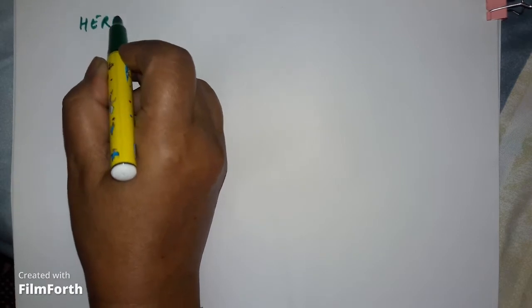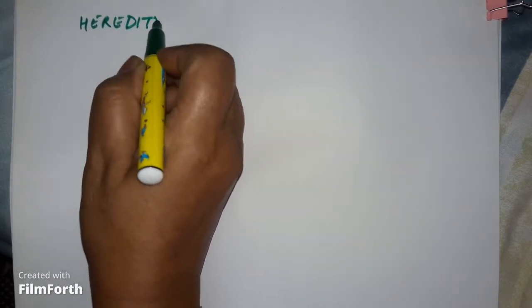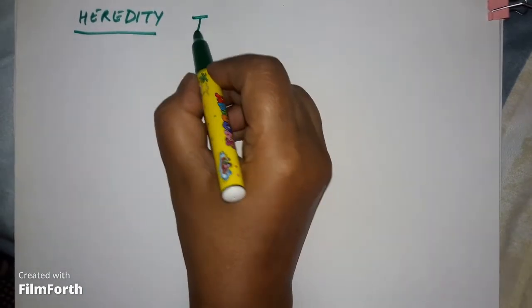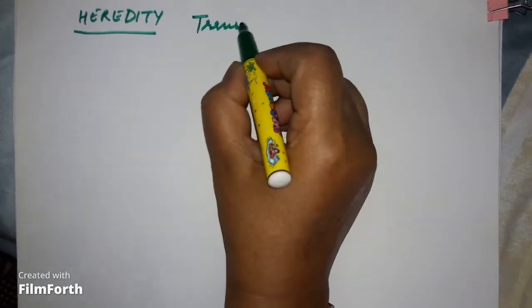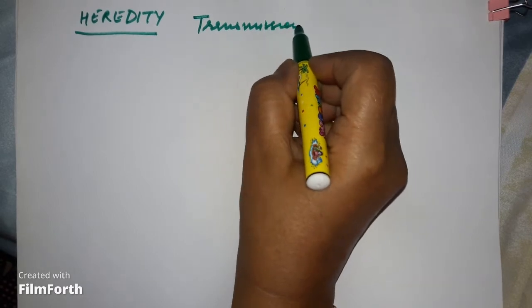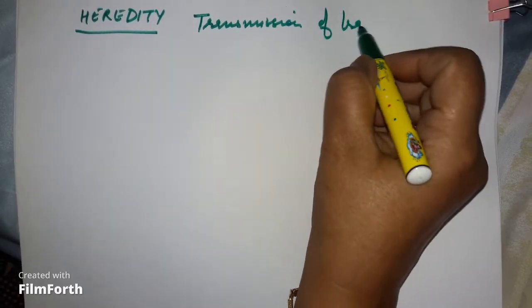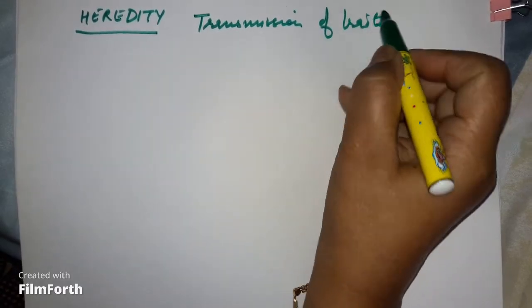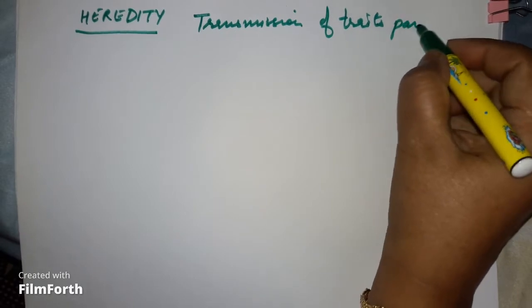In this video we'll discuss the principles of inheritance, Chapter 5. Heredity is the transmission of traits from parents to offspring.